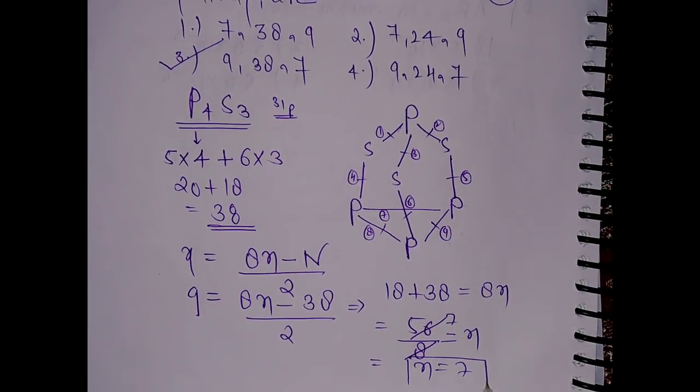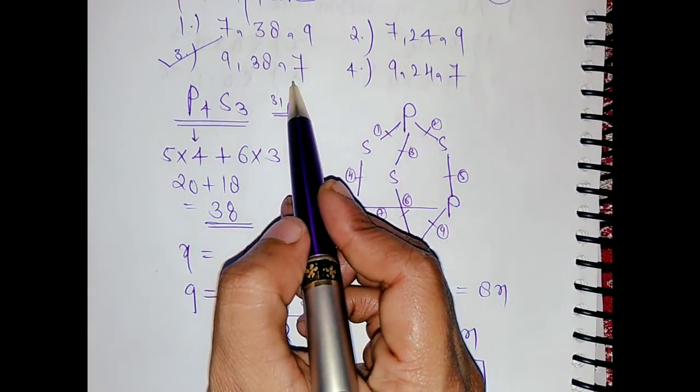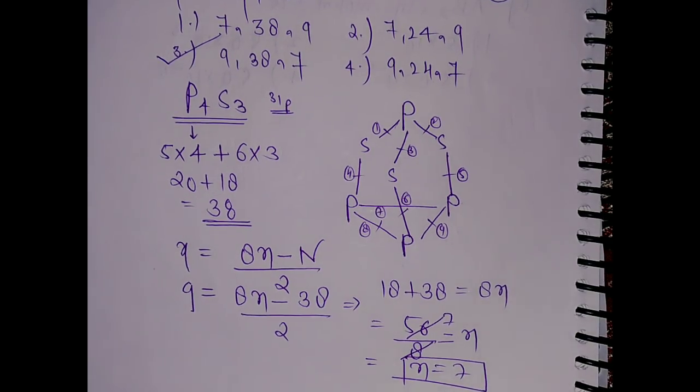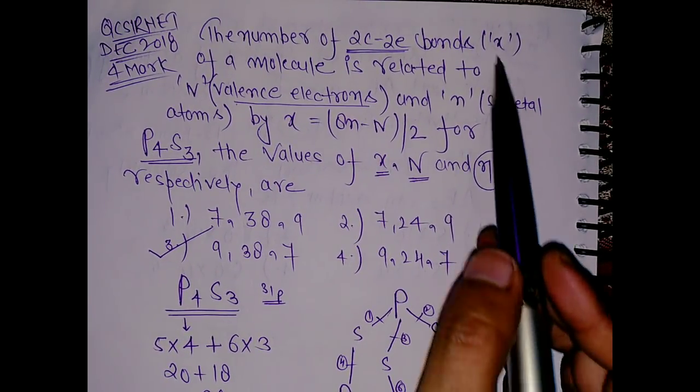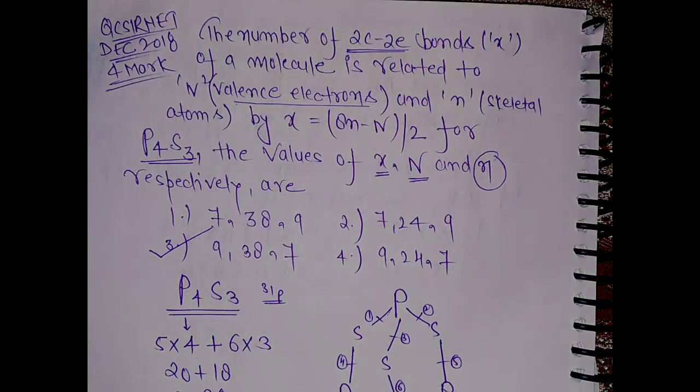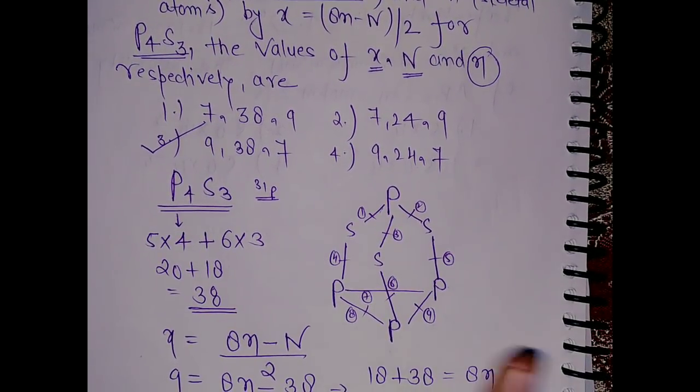As you can see in the third option, this is 7, so it was very easy. Don't get confused by having so much information. If you know the structure of P4S3, then it is very easy.